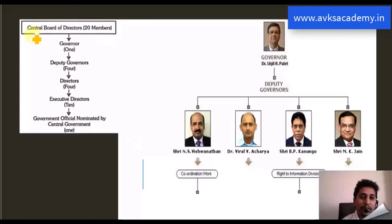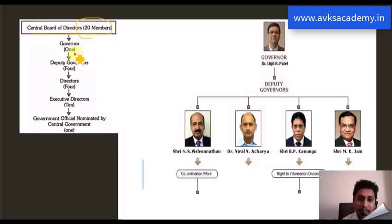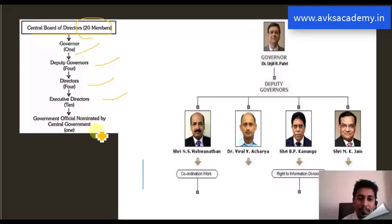We will focus on the Central Board of Directors. There are totally 20 members in the Central Board of Directors: one Governor, four Deputy Governors, four directors, ten executive directors, and one government officer nominated by the central government.